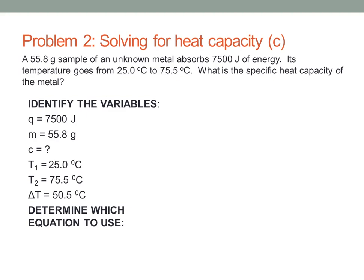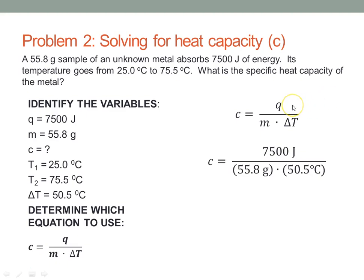Now determine the equation to use. We have to rearrange our equation. When solving for C, C is equal to Q divided by M times delta T. Now we're ready to plug in the numbers — C equals Q divided by M times delta T. Then we always check our units to make sure they cancel. In this case, nothing cancels.